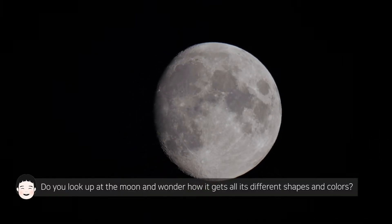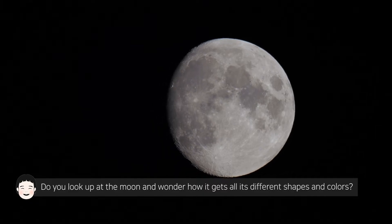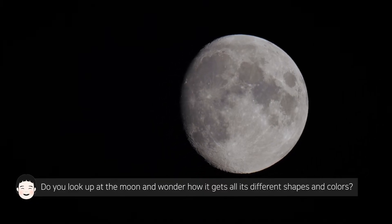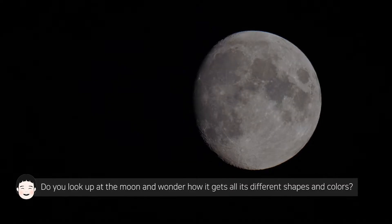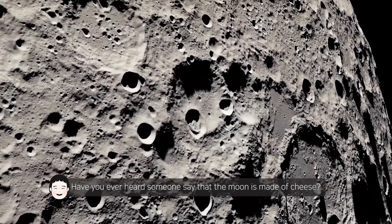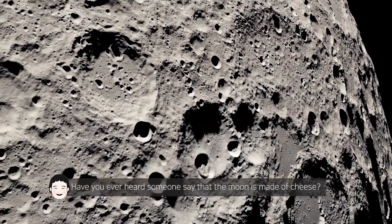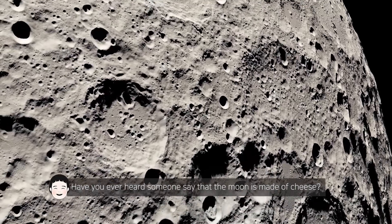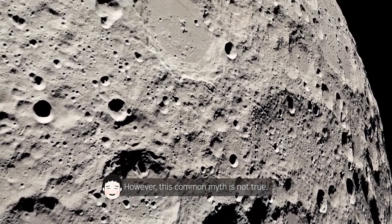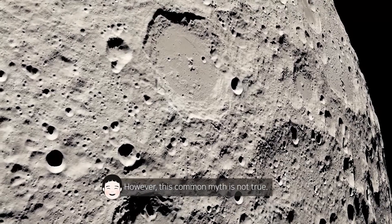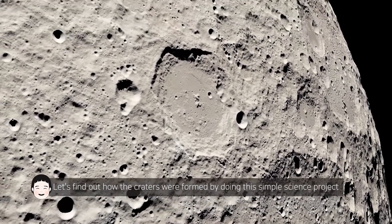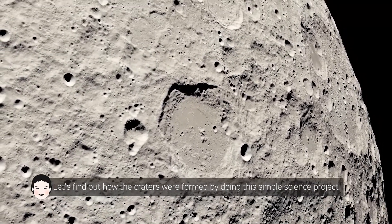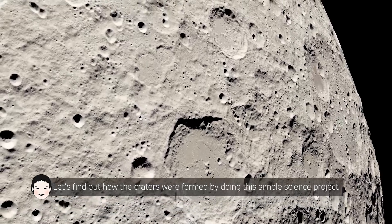Do you look up at the moon and wonder how it gets all its different shapes and colors? Have you ever heard someone say that the moon is made of cheese? However, this common myth is not true. Let's find out how the craters were formed by doing this simple science project.